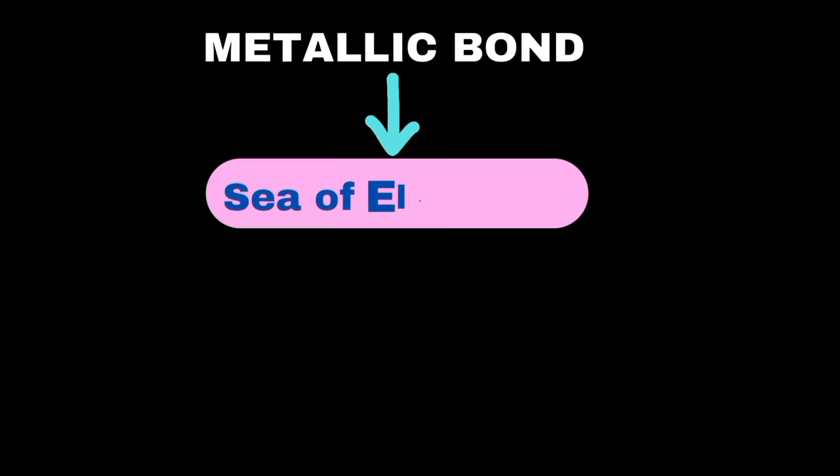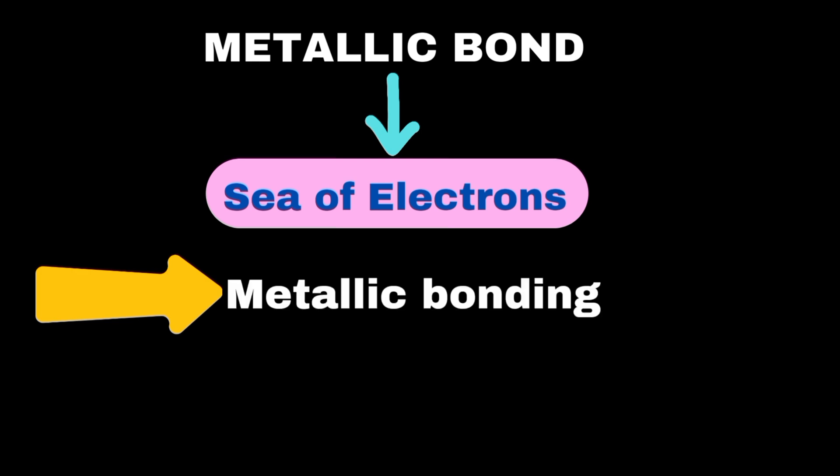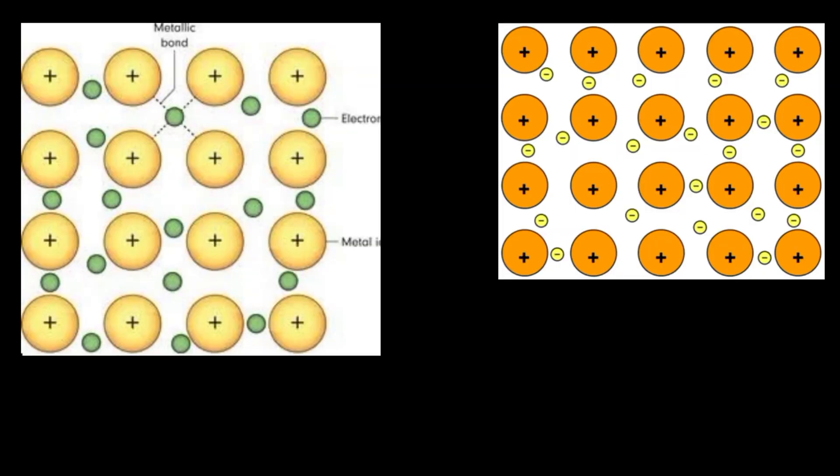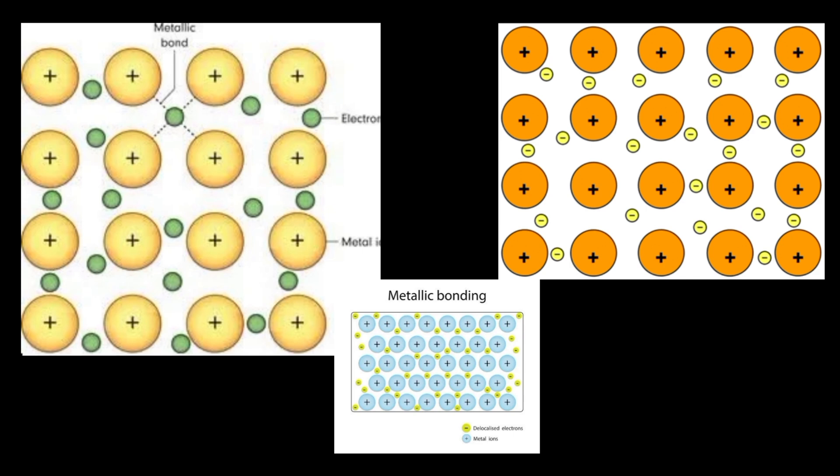Metallic bonds occur in metals, where atoms share a sea of free-moving electrons. In this type of bonding, the outer electrons of metal atoms become delocalized, meaning they are not tied to any specific atom. Instead, they flow freely throughout the metal structure, creating a strong bond that holds the atoms together.